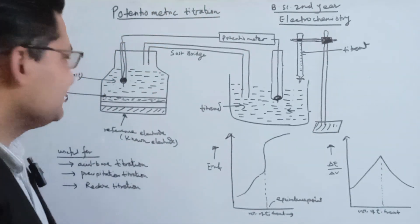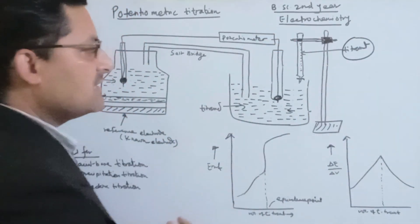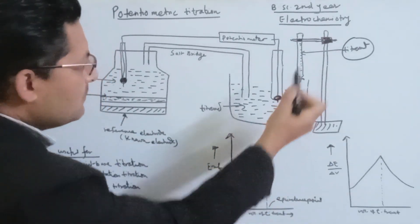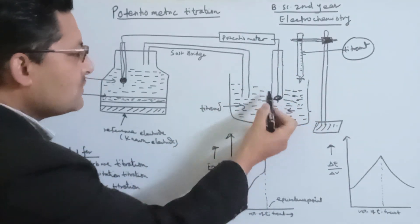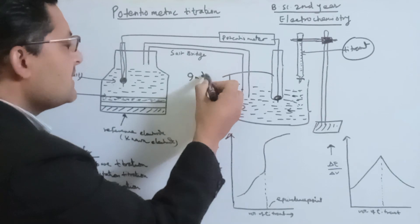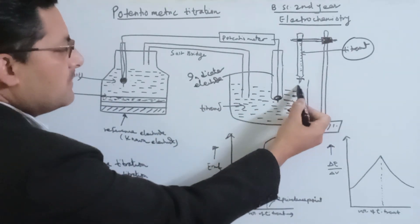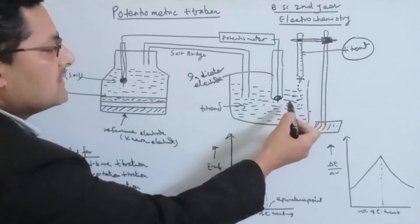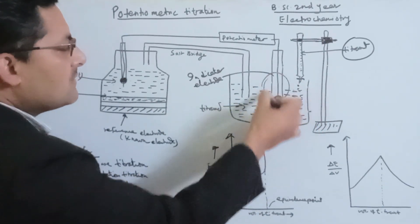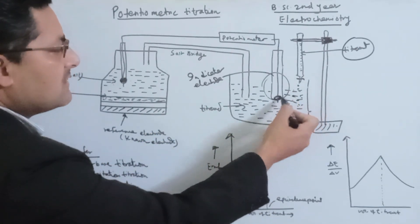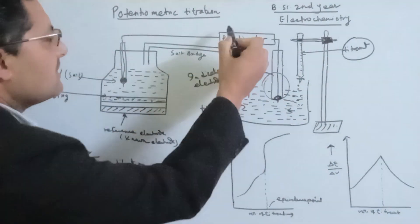We will set up the burette for the titration. We will add the titrant dropwise. As we add the titrant dropwise from the burette, we use the indicator electrode. As the titrant is dropped dropwise, the concentration of ions and the concentration of reactant change. This is reflected in the potentiometer EMF reading.